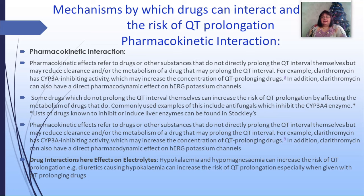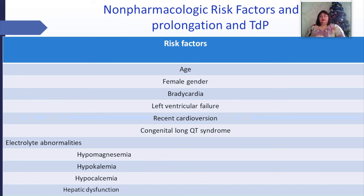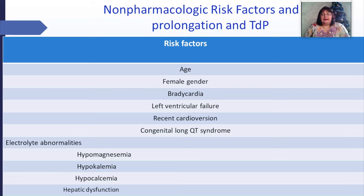Some drugs which do not prolong the QT interval themselves can increase the risk of QT prolongation by affecting the metabolism of drugs that do. Commonly used examples include antifungals, which inhibit the CYP3A4 enzyme. Drug interactions also affect electrolytes. Hypokalemia and hypomagnesemia can increase the risk of QT prolongation. Diuretics causing hypokalemia can increase the risk of QT prolongation, especially when given with QT-prolonging drugs. Non-pharmacological factors for prolonged QT and TdP include age over 65, female gender, bradycardia, left ventricular failure, recent cardioversion, congenital long QT syndrome, electrolyte abnormalities including hypomagnesemia, hypokalemia, hypocalcemia, and hepatic dysfunction.